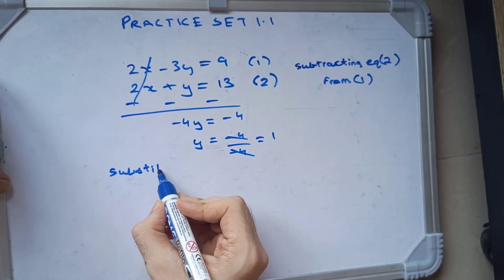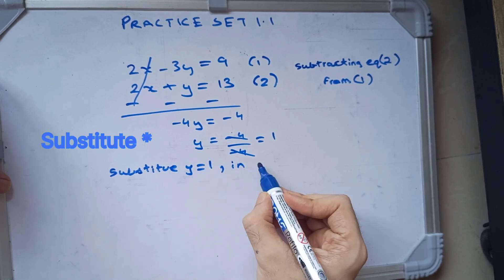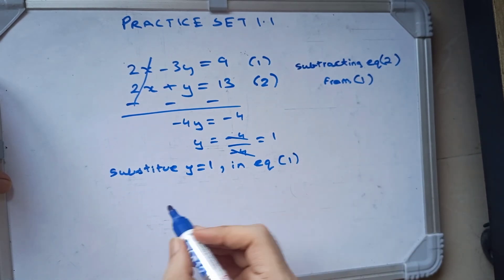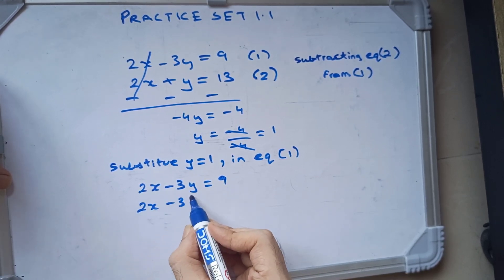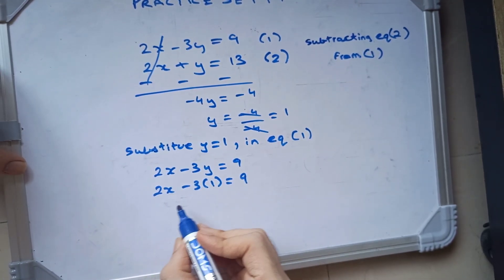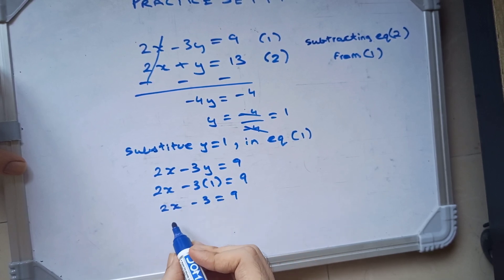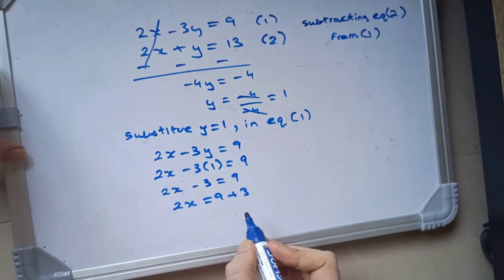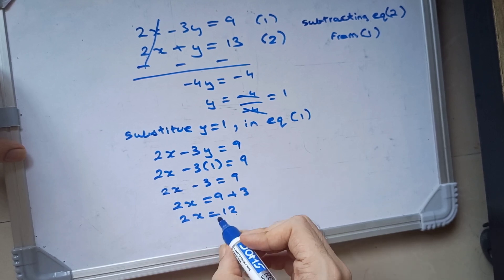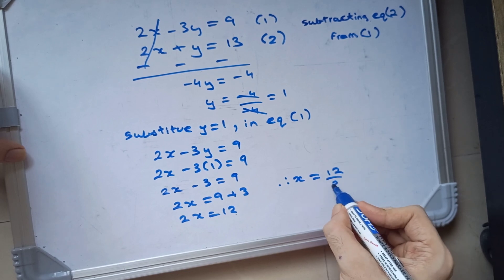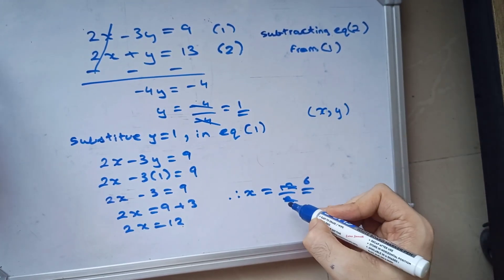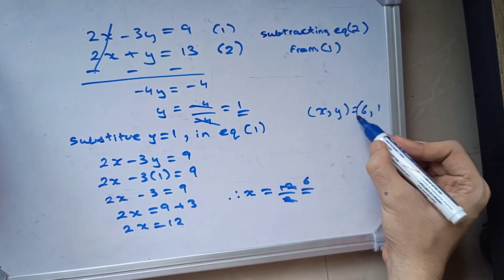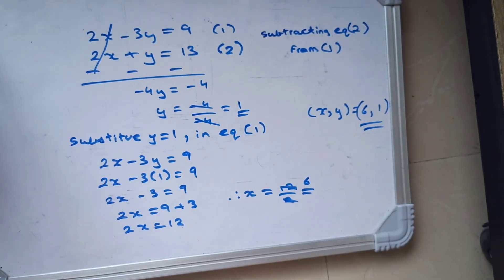Now we are going to substitute the value of y, which is 1, in equation 1. We get 2x minus 3y which is equal to 9. Substituting y equals 1, we get 2x minus 3 into 1 is 3, so 2x minus 3 is equal to 9. 2x is equal to 9 plus 3, which gives 12. So 2x is equal to 12, therefore x is equal to 6. So we got both values. Thank you for watching and please subscribe to my channel.